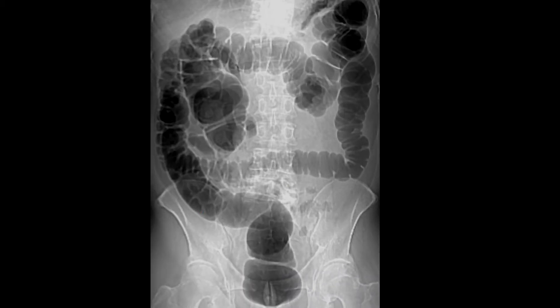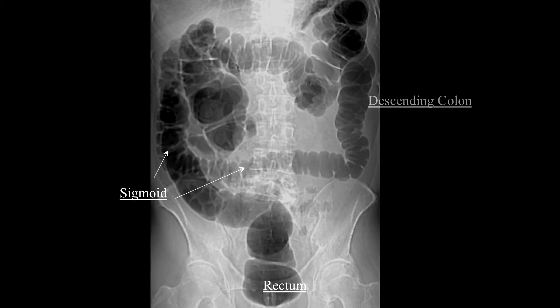This is a case where the patient would have had a very difficult — and potentially failed — colonoscopy. If you follow from the rectum up into the sigmoid, the sigmoid actually dives all the way up into the right upper quadrant, comes back down, and then across here is the descending colon, the transverse, and then here is the right colon and the cecum. So your right colon is actually medial to your sigmoid — obviously a very difficult colonoscopy.